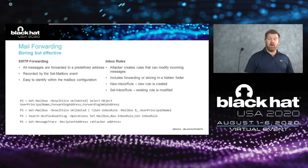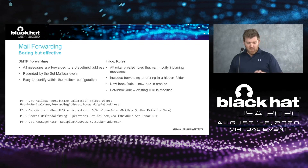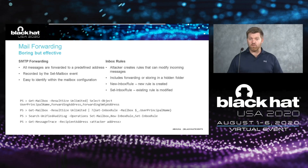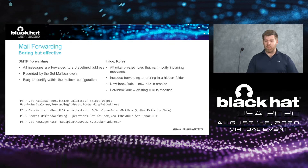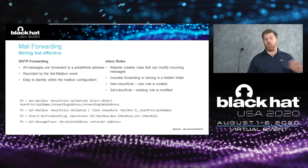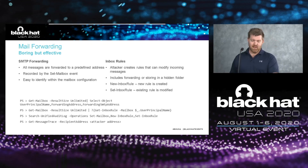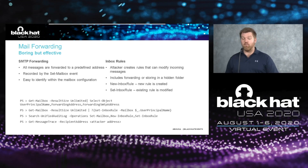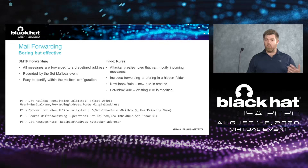In addition to forwarding and inbox rules, we have seen on a handful of occasions attackers configure flow rules. This way they can use the Microsoft automation framework to take action on particular messages, generally forwarding them to an external address. These are much harder to detect because none of the configurations are contained within the mailbox itself — you have to be looking in the unified audit log for suspicious flow entries being created.